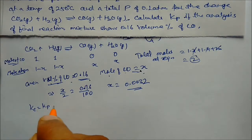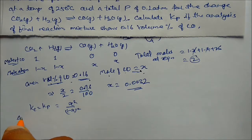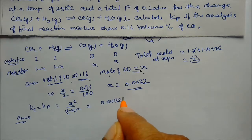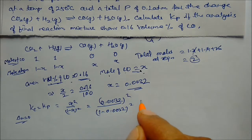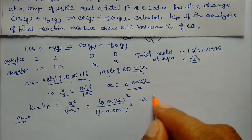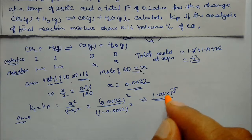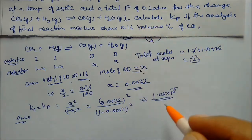Since Δn = 0, Kp = Kc = x² / (1 − x)² = (0.0032)² / (1 − 0.0032)² = 1.03 × 10⁻⁵. This is our answer for Kp.